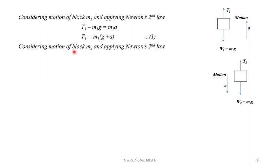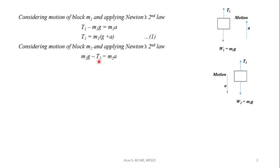Considering the motion of block M2 and applying Newton's second law: W2 minus T2 equals M2 times A. That is, M2g minus T2 equals M2 times A. Rearranging, T2 equals M2 times (g minus A). This is equation number 2.